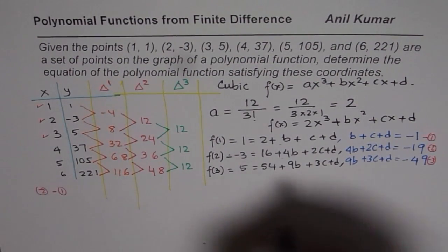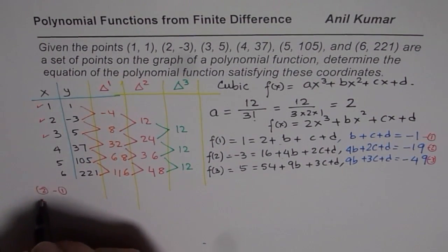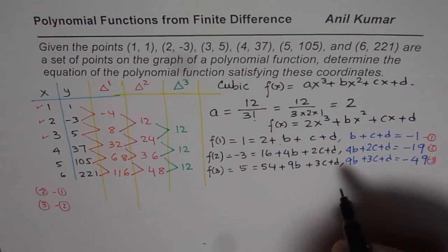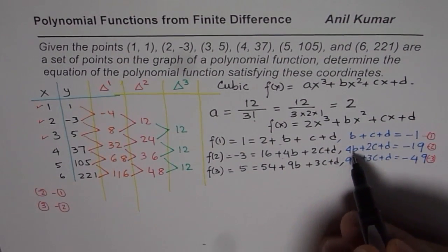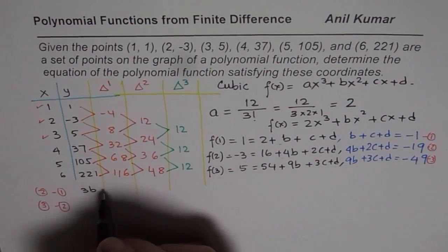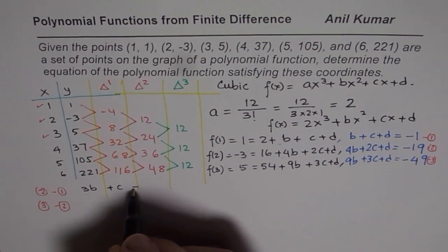We can eliminate d by finding 2 minus 1, and then 3 minus 2 also. So we will do both these, one by one. So when I do 2 minus 1, 4b minus b is 3b.